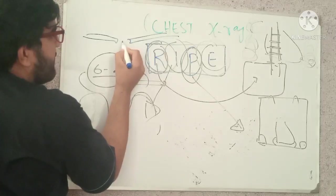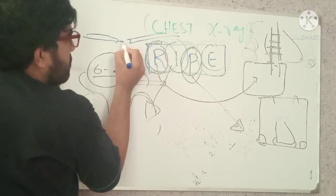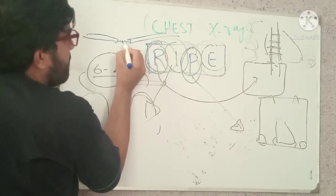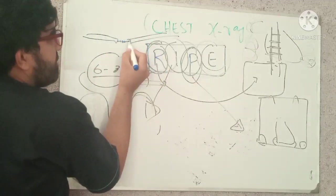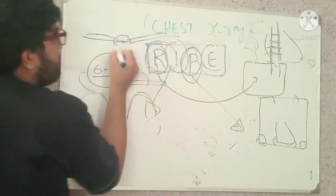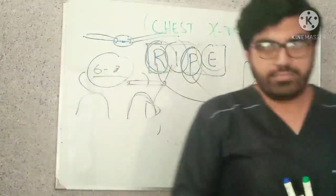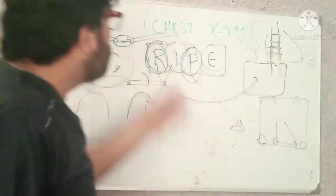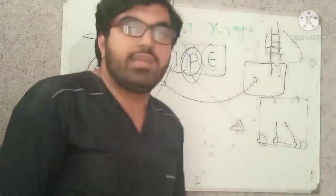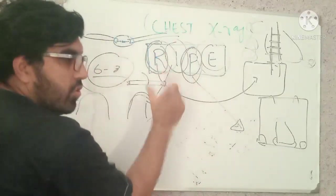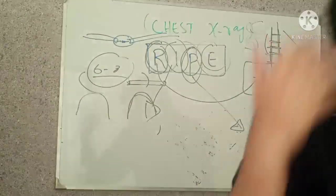For assessing rotation: the two clavicles are your landmarks. The distance from the medial end of one clavicle to the spine must be equal to the distance from the medial end of the other clavicle to the spine — they must be equidistant. If this is not equidistant, you cannot comment on the hilum, because most of the time the patient may appear to have bilateral hilar lymphadenopathy or a bulky right hilum, but when you see the film is rotated, that is the explanation. Thanks for watching — subscribe and share.